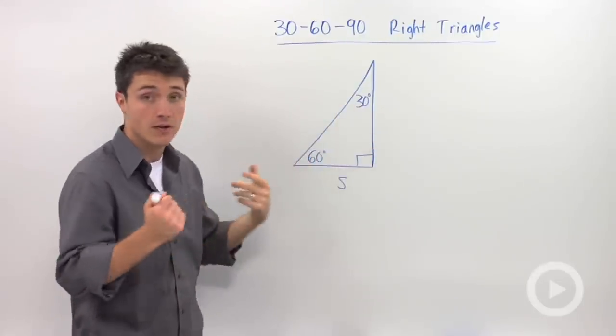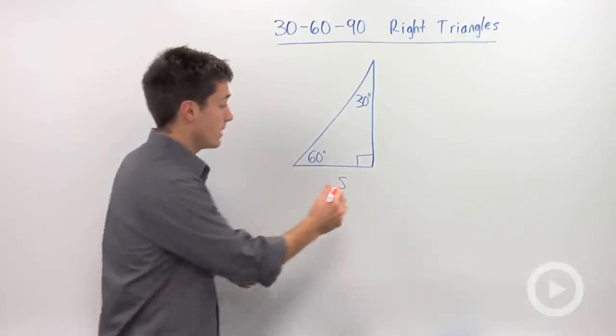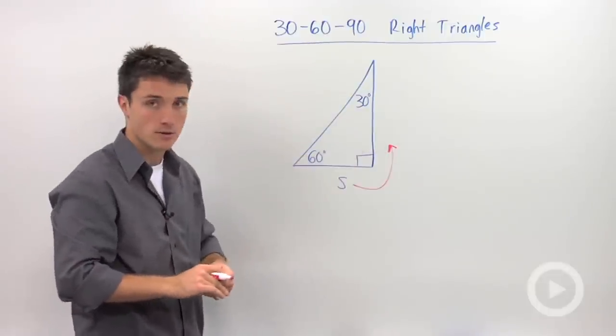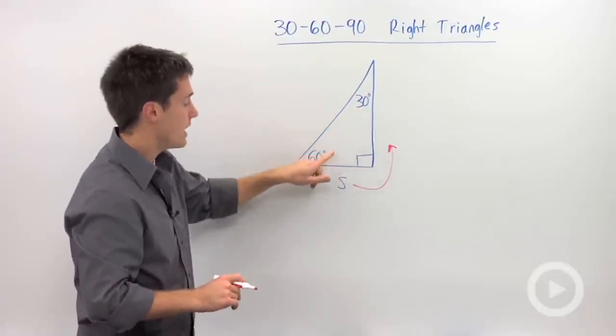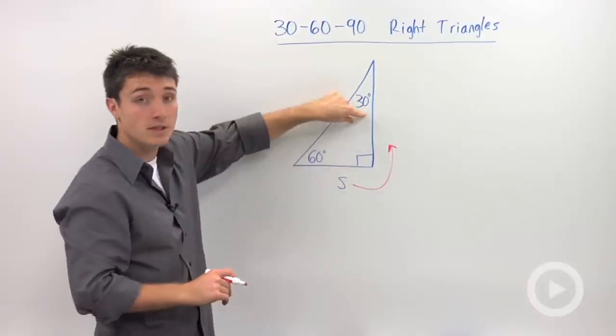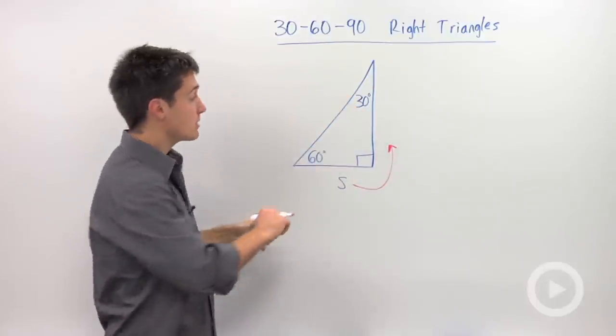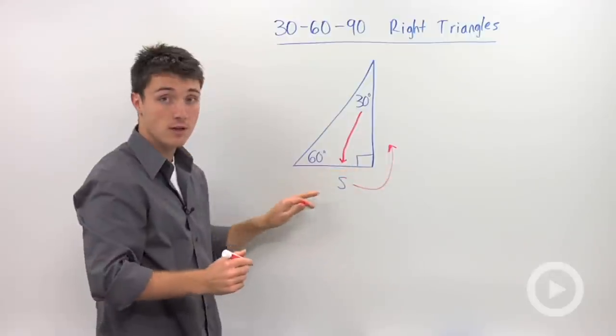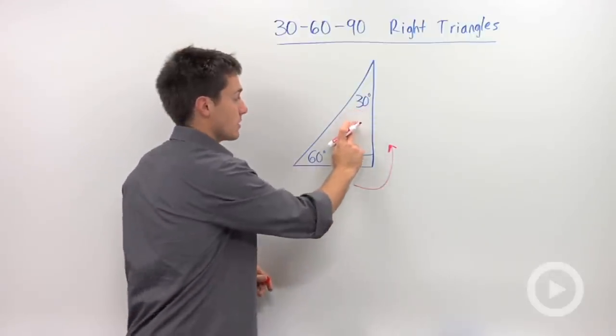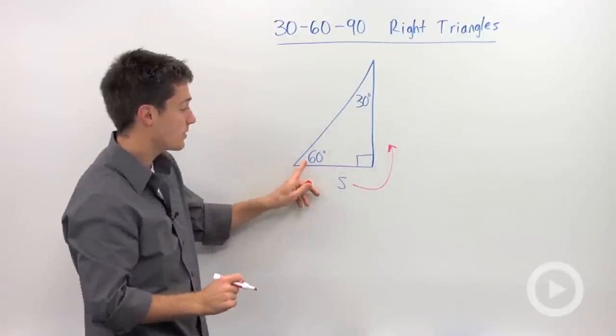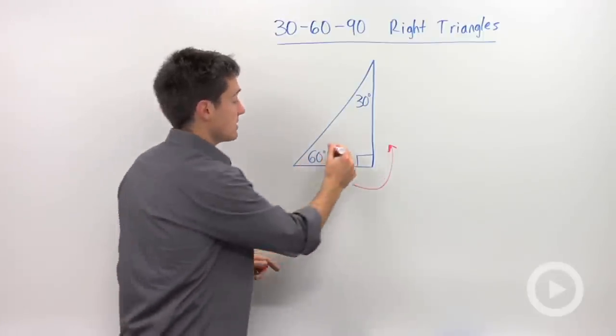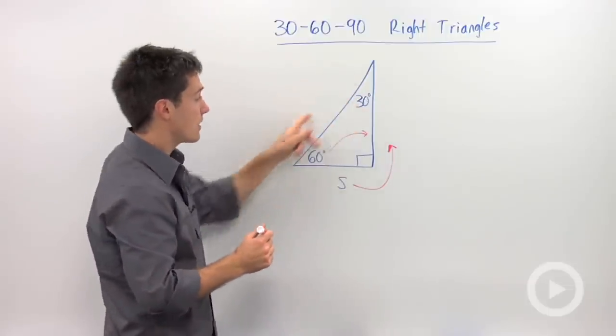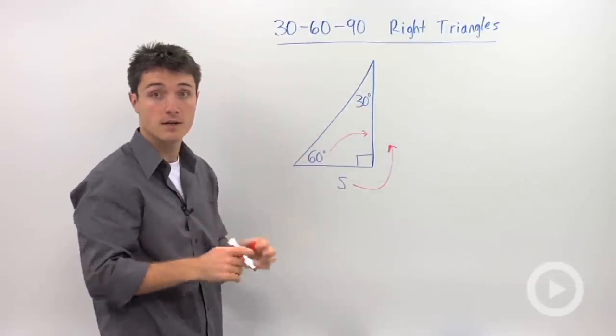So the shortcut, and again this is based on the Pythagorean theorem, is to find your longer leg. Now how do I know that this is my longer leg? Well if I look at my angle measures, 30 degrees is my smallest measure, which means the side that is opposite of 30 will be my shortest leg. The next longest will be my next largest angle. And since 60 degrees is smaller than 90, 60 degrees is my next longest leg. And then, of course, our hypotenuse is always the longest side in our triangle.